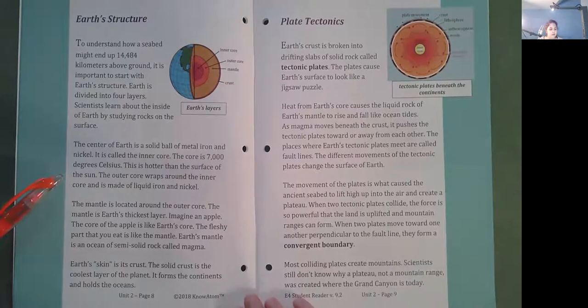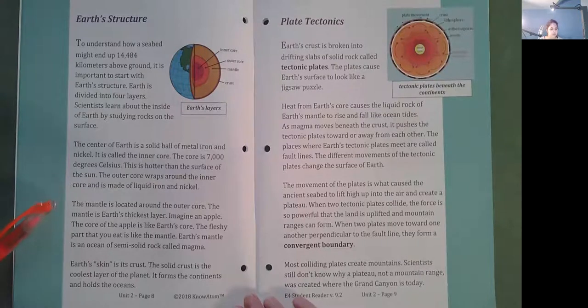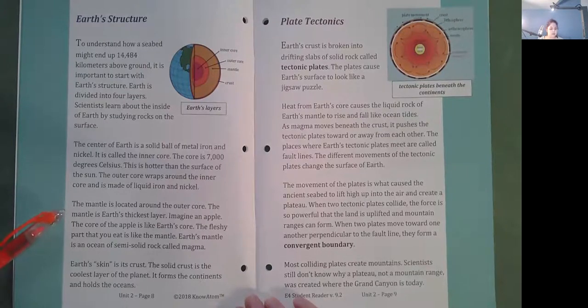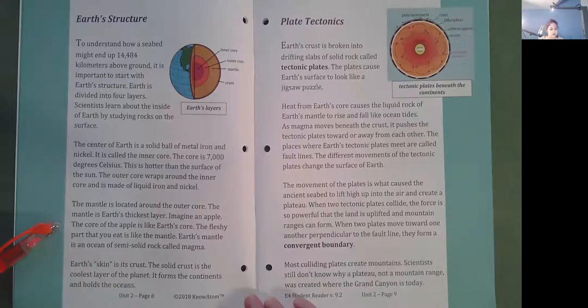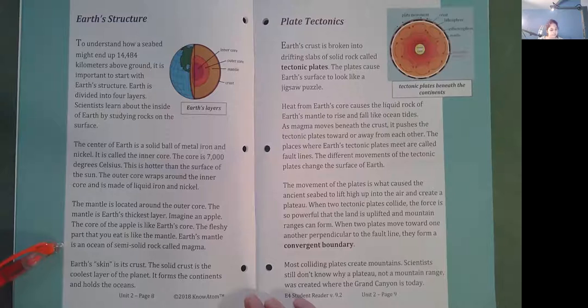The outer core wraps around the inner core and is made of liquid iron and nickel. The mantle is located around the outer core. The mantle is Earth's thickest layer. Imagine an apple. The core of the apple is like Earth's core. The fleshy part that you eat is like the mantle. Earth's mantle is an ocean of semi-solid rock called magma. Earth's skin is its crust. The solid crust is the coolest layer of the planet. It forms the continents and holds the oceans.